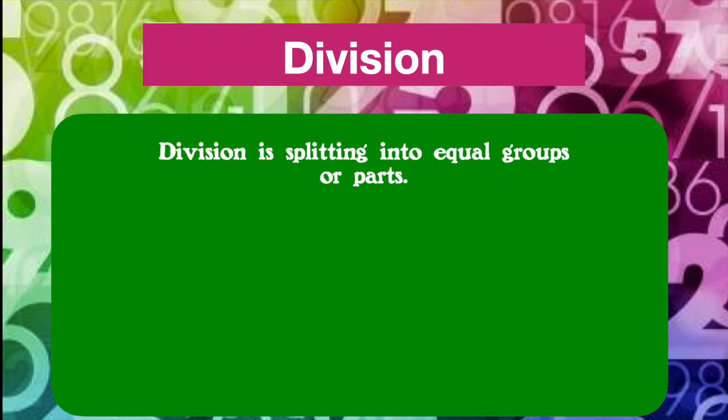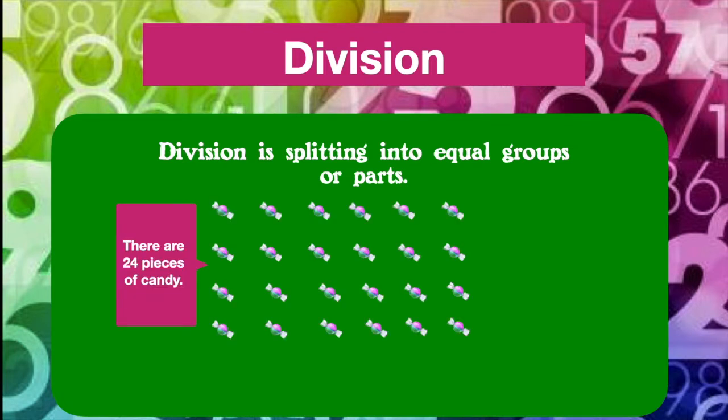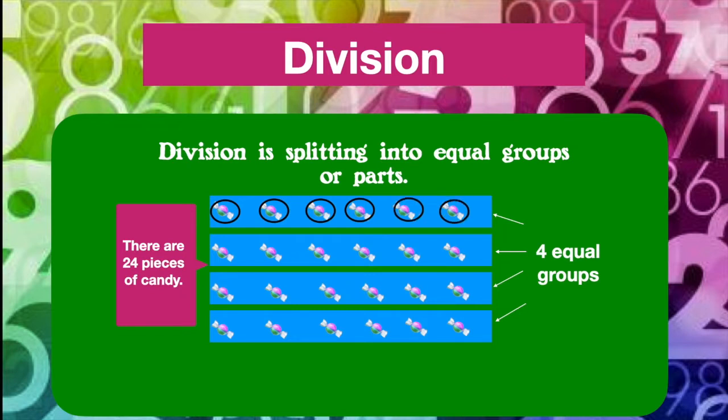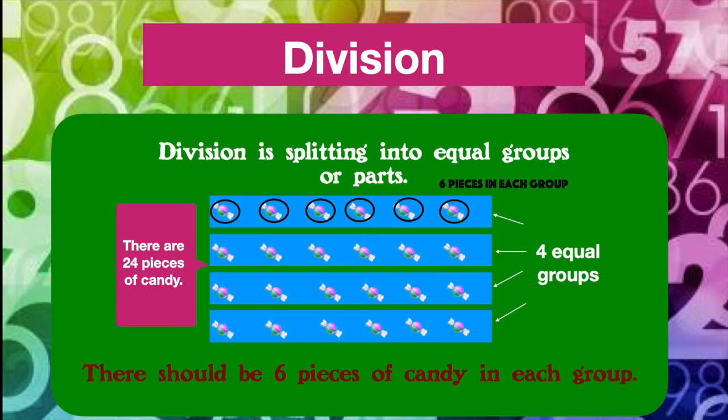For example, you have 24 pieces of candy. You want to divide those 24 pieces of candy into four equal groups. One, two, three, four. Once sorted, there will be one, two, three, four, five, six pieces of candy in each group. There should be six pieces of candy in each group.